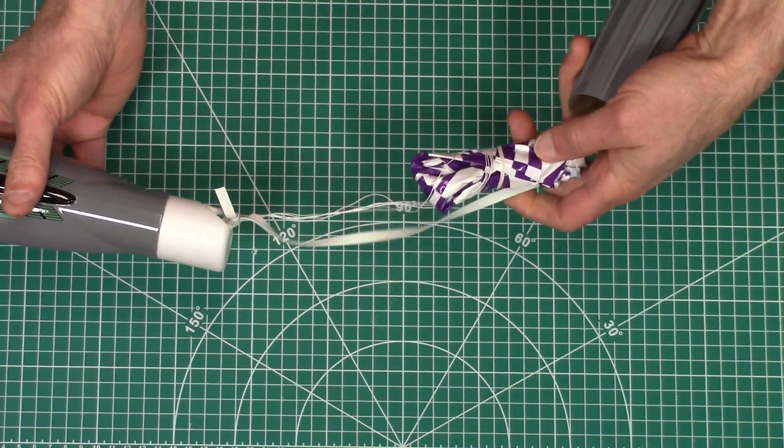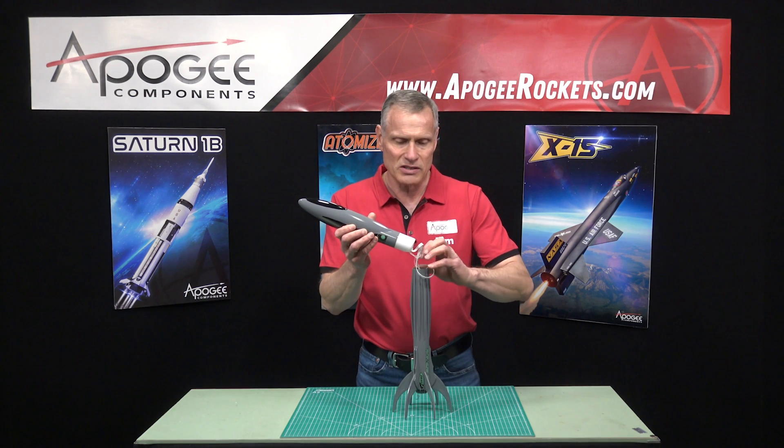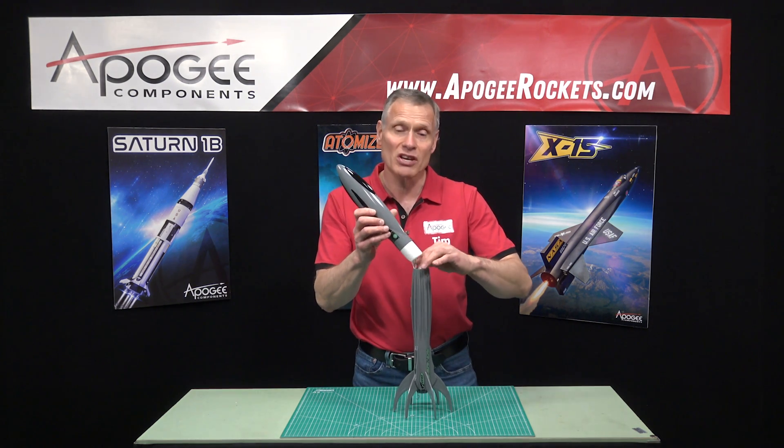It does come with a plastic parachute and a rubber shock cord. Again, this is called the Estes Vesta Intruder.